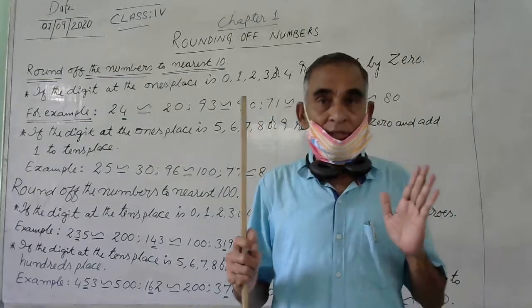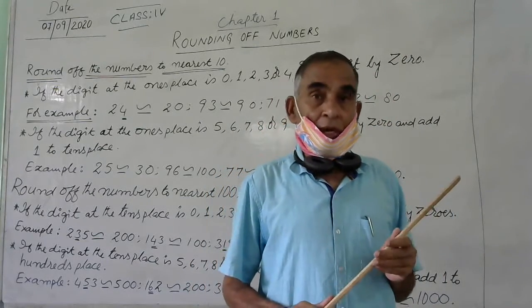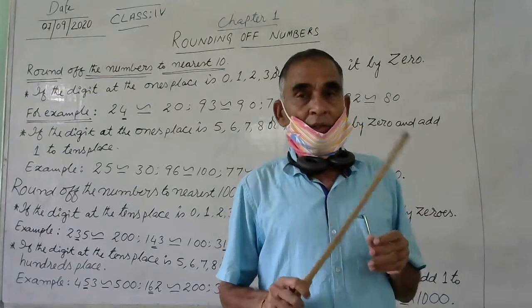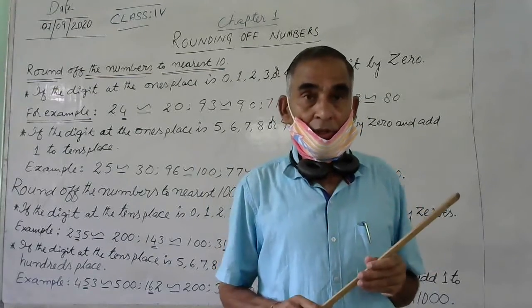Round the numbers to the nearest 10th place, 100th place, and 1000th place. Whatever the rules we have followed in class 3, same rules here also in the 4th.